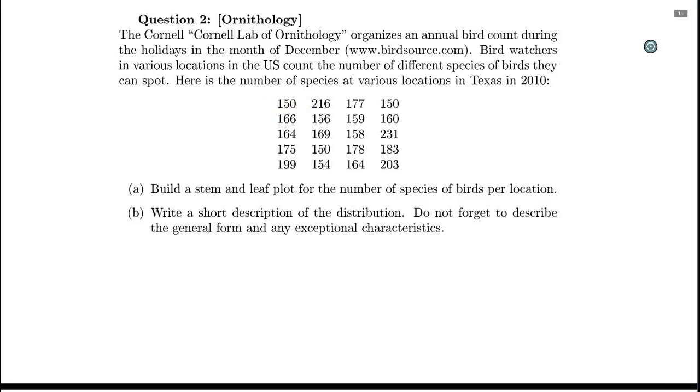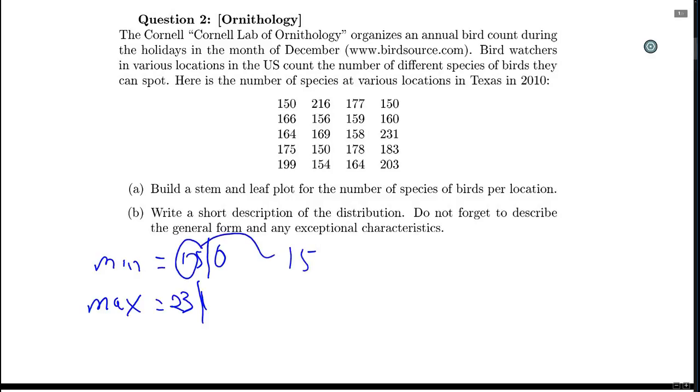When building a stem and leaf plot, what we need to do is find the minimum first of all. So here we have a minimum which is 150 and the maximum is 231. The right most digit is going to represent the leaf. For example, 0 for 150, 1 for 231. The remaining digits will represent the stem. So 15 is the stem for 150, 23 is the stem for 231. So we need stems from 15 to 23.